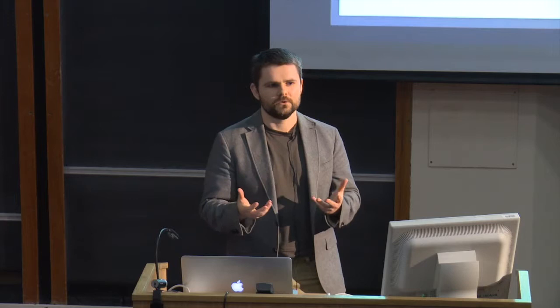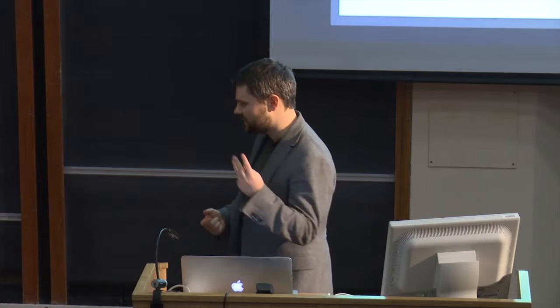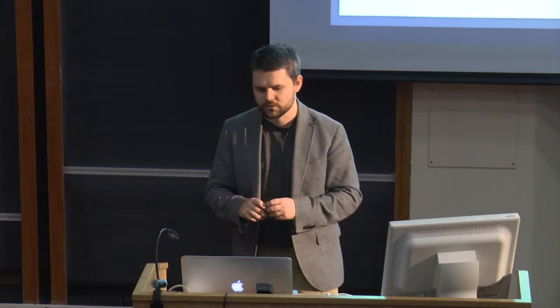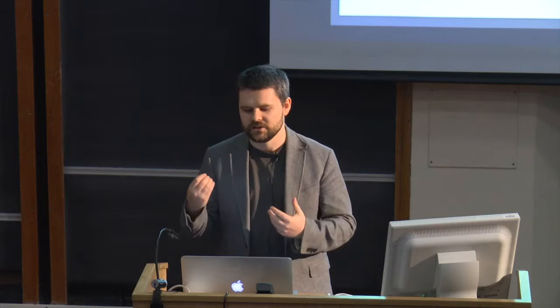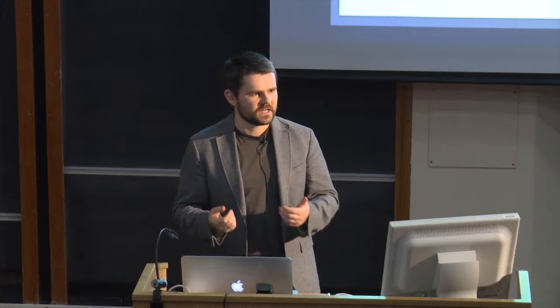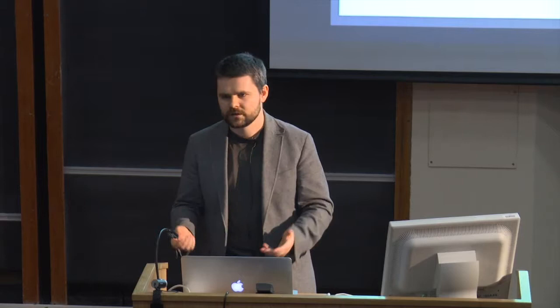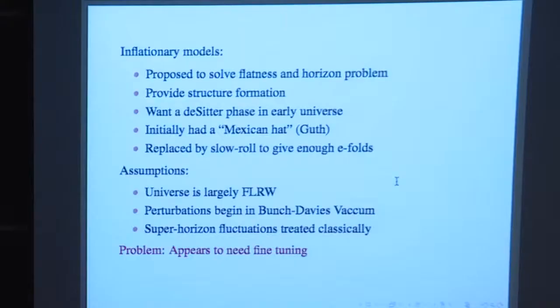The second assumption is that perturbations can be treated as quantum mechanical perturbations starting in the Bunch-Davies vacuum — any perturbations will begin in the unique vacuum compatible with de Sitter space. Third, and this one nobody has a fully good handle on yet, is that once a fluctuation has left the Hubble horizon it somehow freezes out and, due to quantum mysticalness, becomes a classical perturbation again. This is always slightly hand-waved. Nonetheless, these simple assumptions give very nice predictions in agreement with WMAP and Planck CMB data.